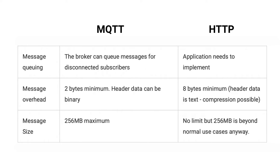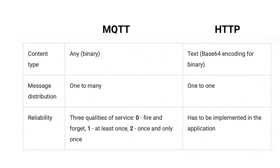In MQTT, the broker can queue messages for disconnected subscribers, while in HTTP the application needs to implement message queuing. Message overhead is 2 bytes minimum in MQTT and 8 bytes minimum in HTTP. Message size is 256 megabytes maximum in MQTT; in HTTP there is no message size limit, but 256 megabytes is beyond normal use cases anyway. Content type for MQTT is any, and for HTTP it is text. Message distribution in MQTT is one-to-many and one-to-one in HTTP. MQTT provides three qualities of service and thus improves reliability, while in HTTP this has to be implemented in the application.